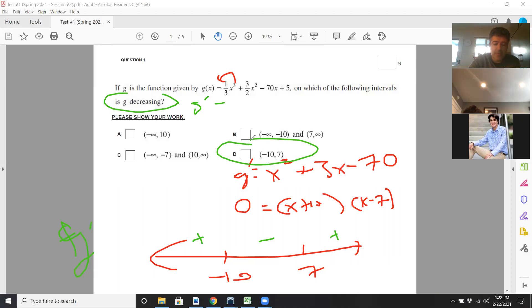Now I did shuffle the choices among all the guys, so maybe d wasn't the correct answer, but it's still negative 10 to 7.